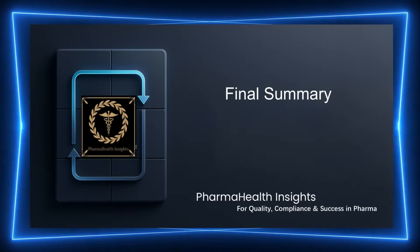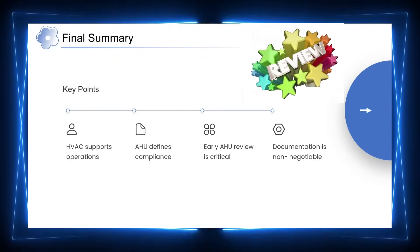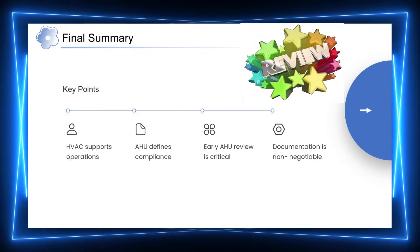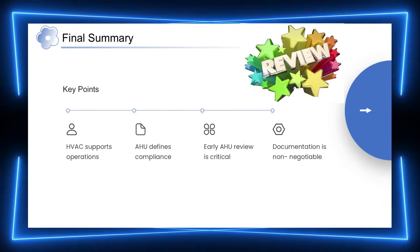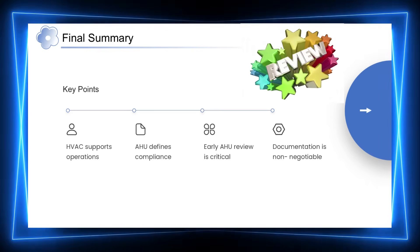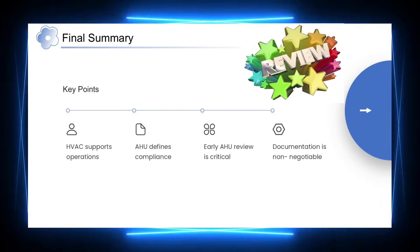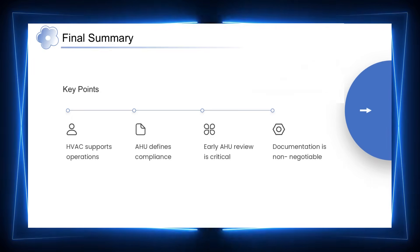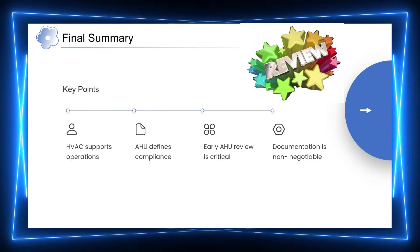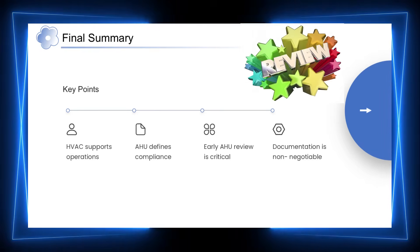To summarize: HVAC provides the infrastructure that supports the facility as a whole. AHUs, however, are the systems that actually execute GMP controls within clean rooms and controlled areas. When AHU design, zoning, and control philosophy are reviewed early, many potential compliance gaps can be avoided. Consistent documentation, monitoring, and periodic review ensure that these controls remain effective over time.